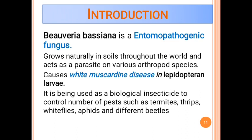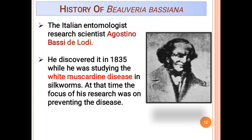Beauveria bassiana is also called white muscardine fungus because it causes white muscardine disease in lepidopteran pests. It is used to control sucking pests and different beetles. It was discovered in 1835 by Italian entomologist Agostino Bassi while he was studying white muscardine disease in silkworms.